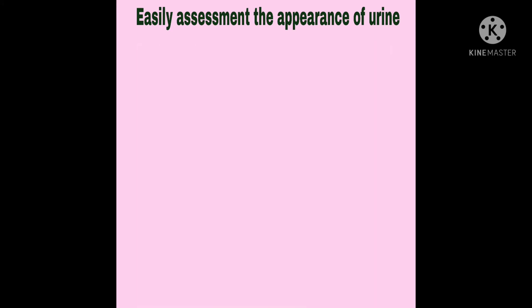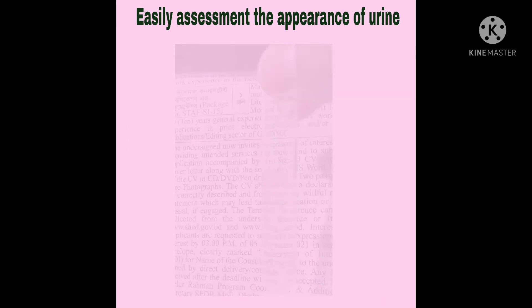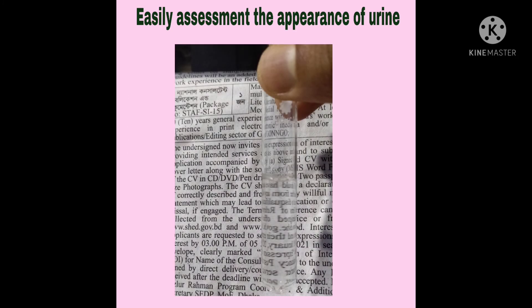To determine the correct appearance, you must first shake the urine sample well and take it to a clean tube. Then hold the tube in front of a piece of writing paper, like the picture.